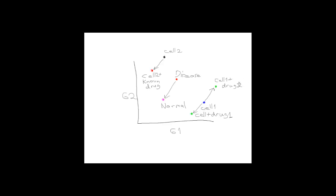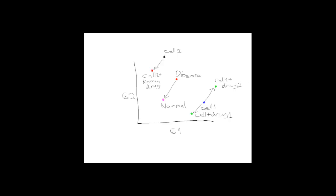Some drugs may push the cell towards the disease direction. In that case this can be used to predict side effects that manifest similar to a disease. Most side effects that are caused by drugs have an associated disease that those drugs can induce.